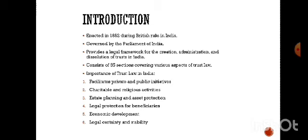The Indian Trust Act was enacted in 1882 during British rule in India. It was governed by the Parliament of India and provides a legal framework for the creation, administration, and dissolution of trusts in India. It consists of 85 sections covering various aspects of trust law, including the formation of trusts, rights of trustees, rights of beneficiaries, and duties of trustees.